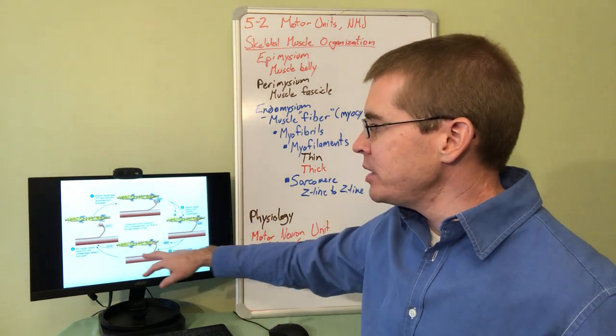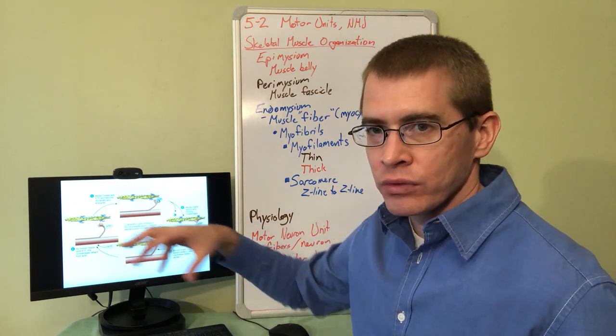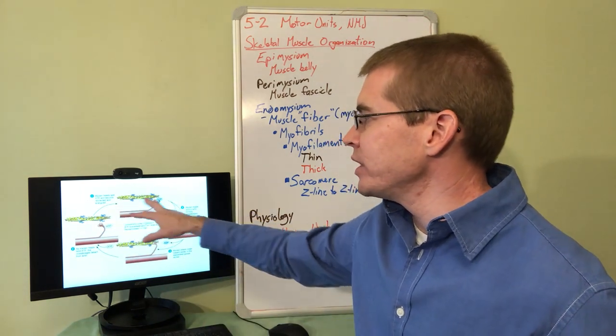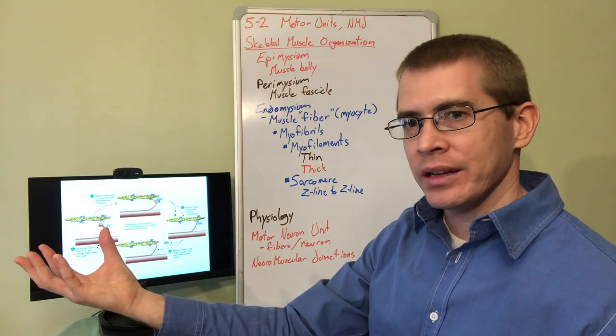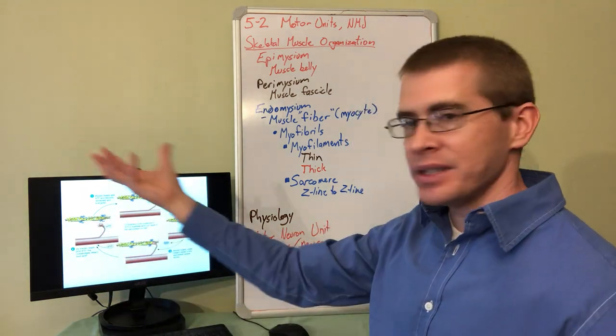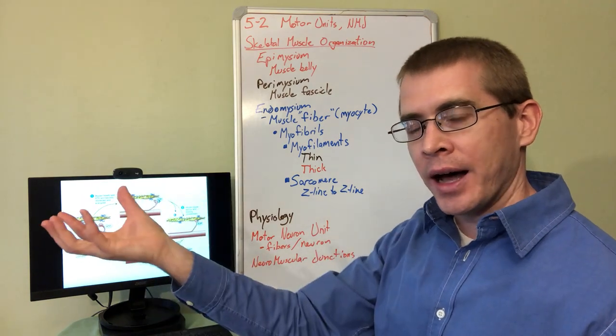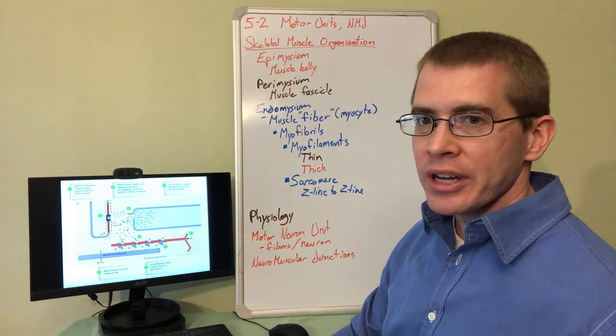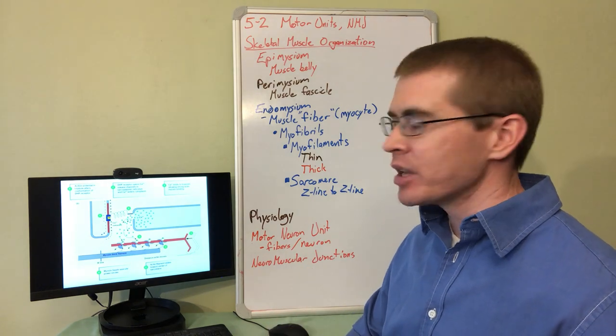When ATP binds to the myosin head, it will actually cause the myosin head to release. The consumption, the hydrolysis of ATP, is going to cause the re-cocking of that myosin head into its open orientation. The consumption of ATP doesn't occur in the pulling; it occurs in the release and the cocking of the myosin. This is interesting physiology I just want to reinforce as we're talking about skeletal muscles.